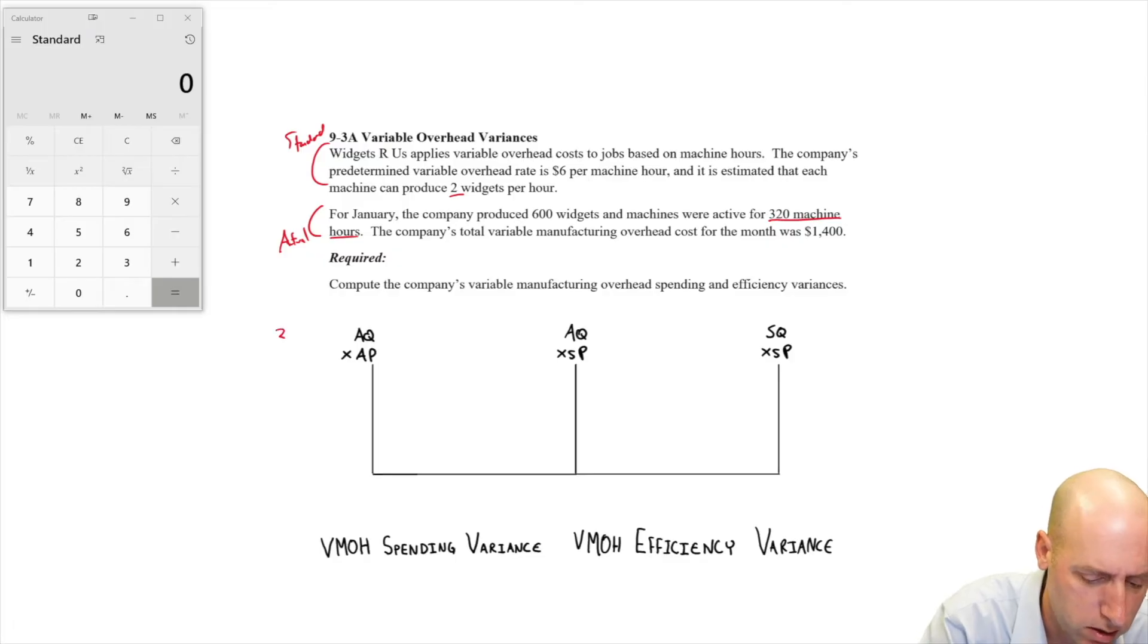What's our actual price per hour? Well, we know we paid $1,400 in actual overhead. We can figure out an hourly rate here by just going 1400 divided by 320. Our hourly rate is $4.375 per hour, $4 and 37 cents an hour. Multiply those through, I get $1,400.